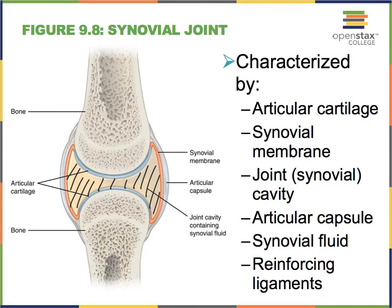Where the articular cartilage is not present around the synovial cavity, we have a membrane—the so-called synovial membrane—which is made up of fibers and various cells that are responsible for creating synovial fluid from our blood plasma.